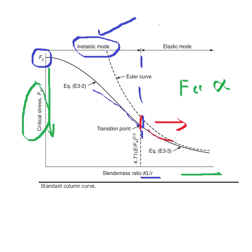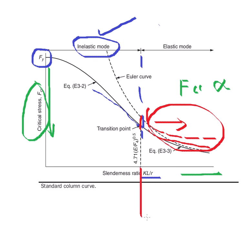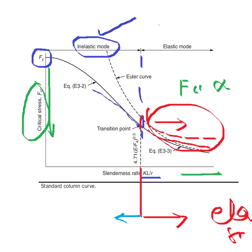The AISC curve and the Euler curve are almost close to each other above the transition slenderness ratio. Beyond this transition, the region is called the elastic mode and Euler buckling is applicable. If the slenderness ratio is less than the transition value, it is the inelastic mode and Euler buckling becomes invalid.